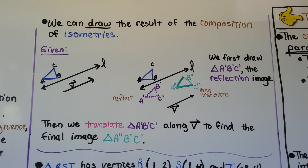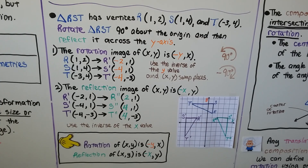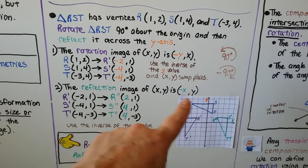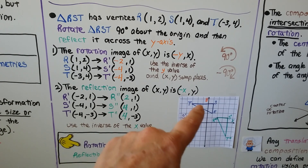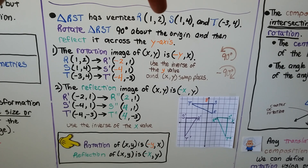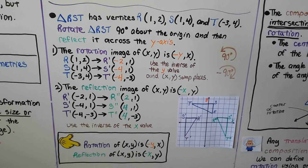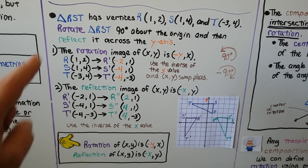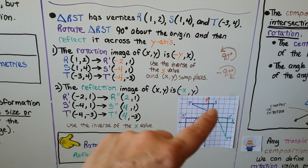We can find the final image: a double prime, b double prime, c double prime. Now we have a blue triangle RST with vertices R at (1, 2), S at (1, 4), and T at (−3, 4). We're going to rotate this blue triangle RST.